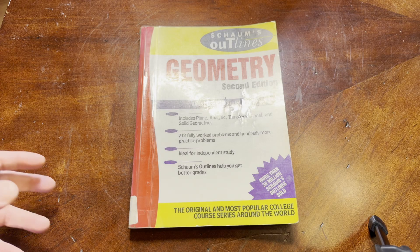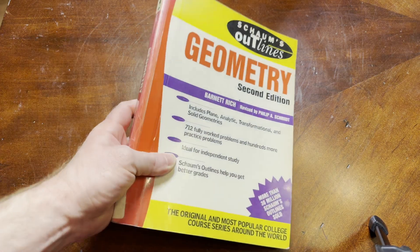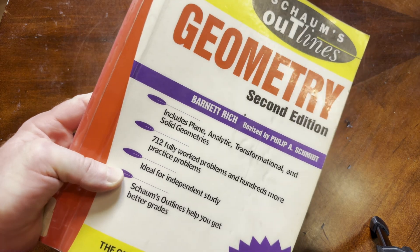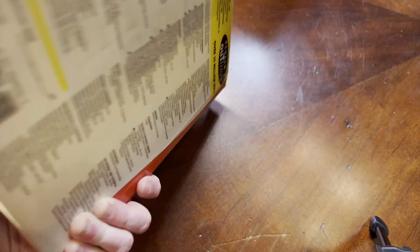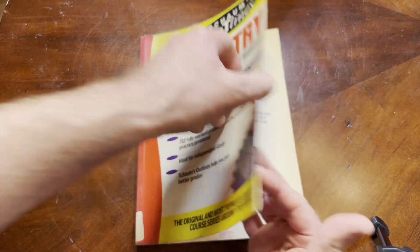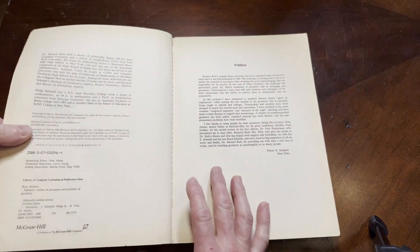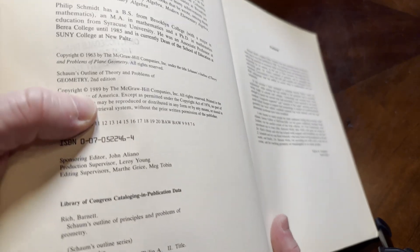Hello everyone. In this short video, I want to show you a book on geometry. It is called Schaum's Outline Geometry. This one is the second edition. I believe it's from 1989. Let's just check here. Yeah, 89.